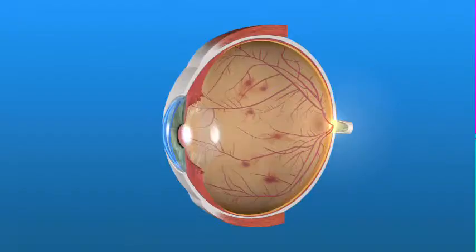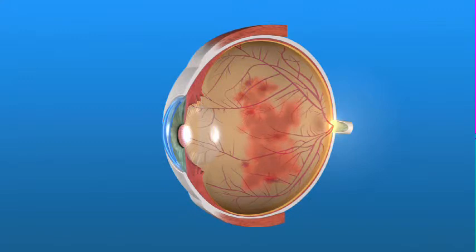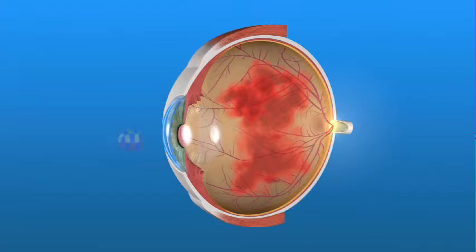It is possible to have a considerable amount of neovascularization and still have good vision for some time. That means that neovascularization may not be caught early enough and serious problems can occur. For instance, the abnormal blood vessels can bleed into the vitreous, the clear gel in the middle of the eye. This bleeding, called a vitreous hemorrhage, can prevent light rays from reaching the retina.